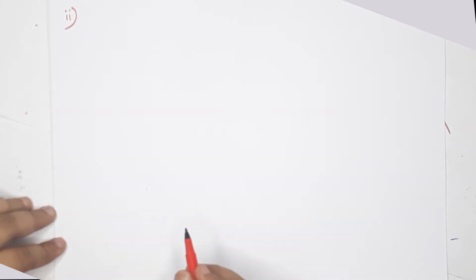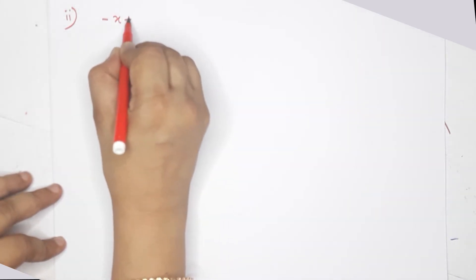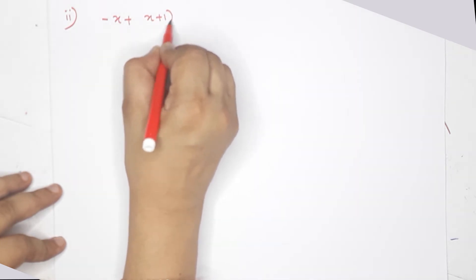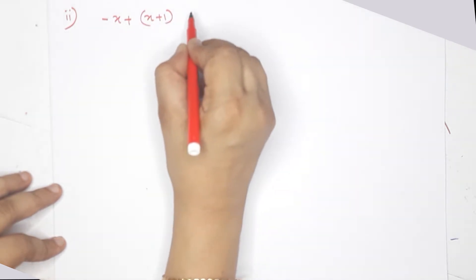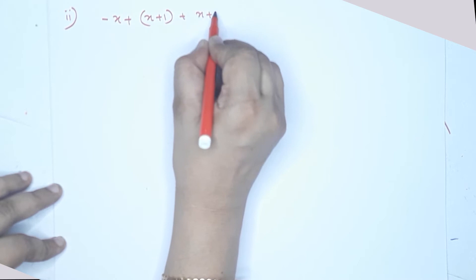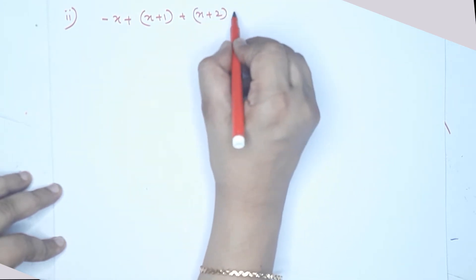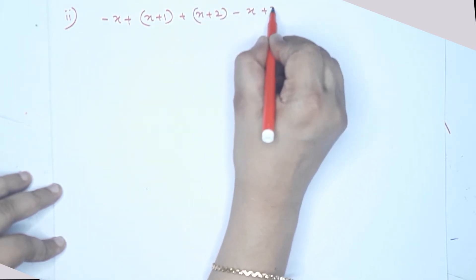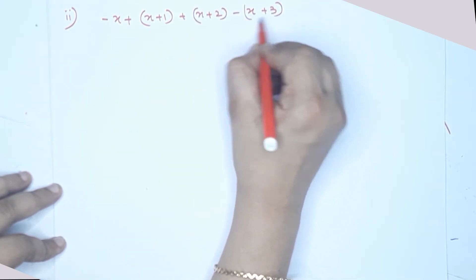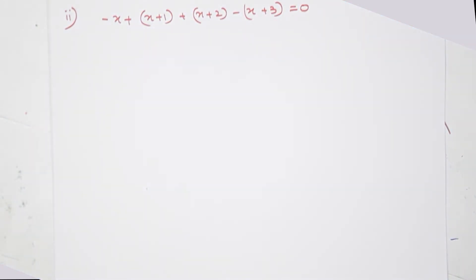That is the second part. The second part question is: negative x plus x plus 1 plus x plus 2 minus x plus 3, that is equal to 0.